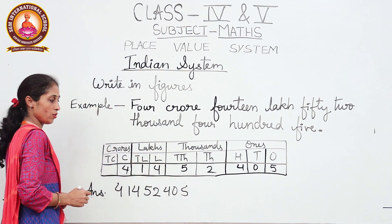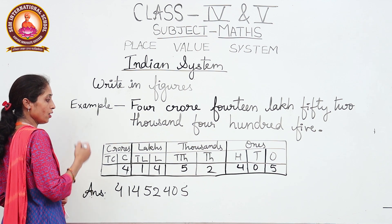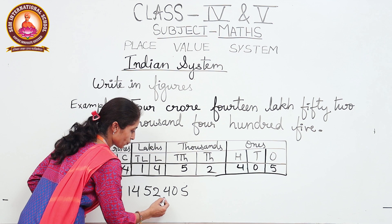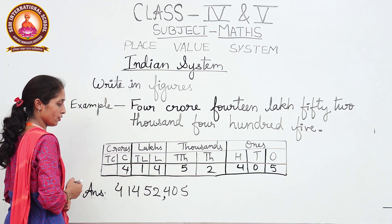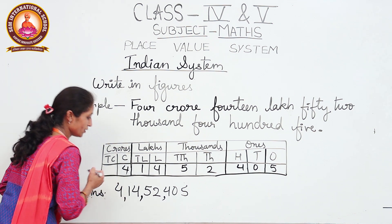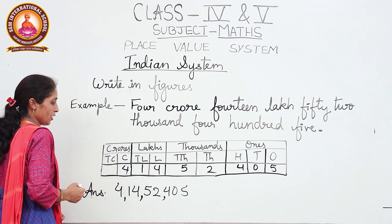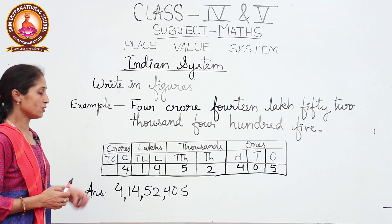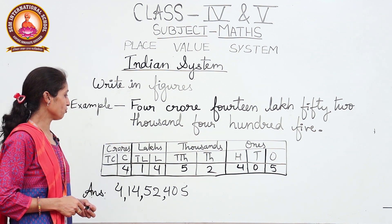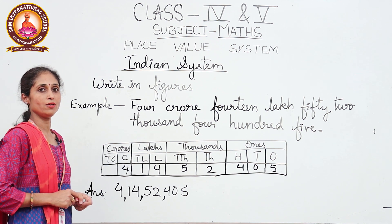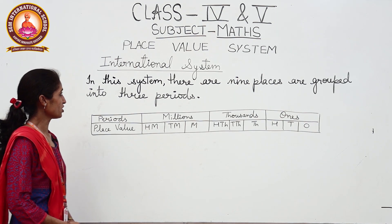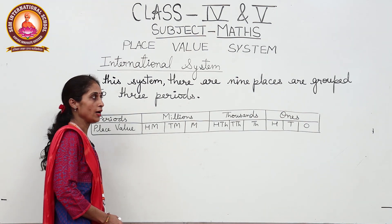We put the commas according to the periods: the first comma after the hundreds place, the next comma after the ten thousands place, and the next comma after the ten lakhs place. So we can read this number as: four crore fourteen lakh fifty-two thousand four hundred five.